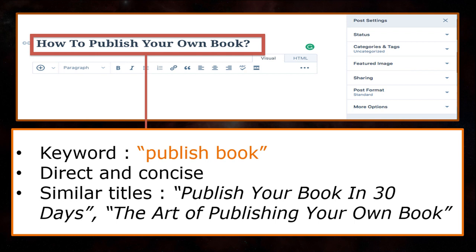Let us illustrate an example. Say you have a blog post in WordPress with a post that talks about how to publish your own book. The most important keyword lies in your title. You need to be direct and concise — something like 'Publish Your Book in 30 Days' or 'The Art of Publishing Your Own Book.' Similar keywords are maintained in both titles: publish, book.